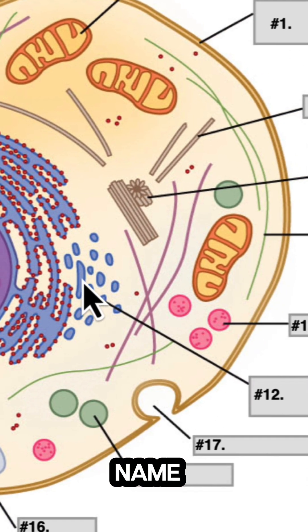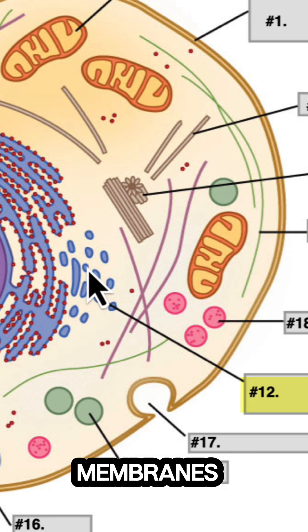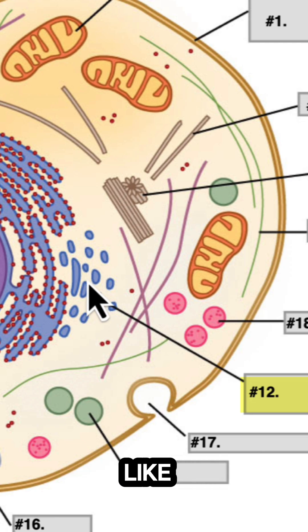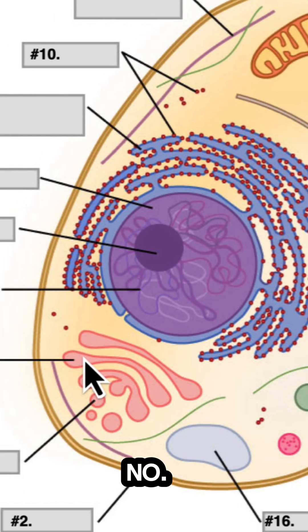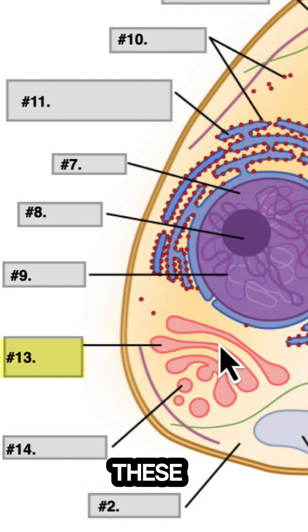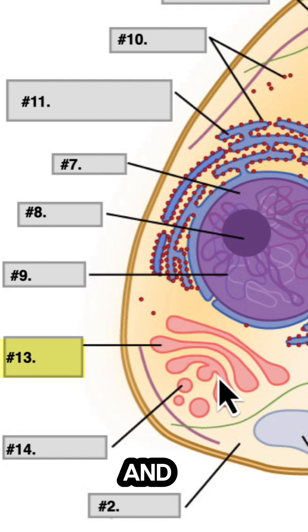Number twelve: name these membranes, which really look more like tubes than stacks of membranes. Number thirteen: name these stacks of membranes.